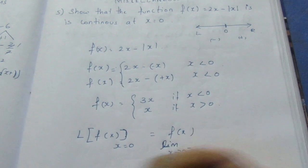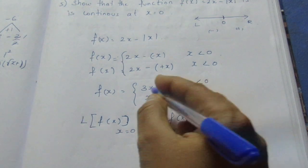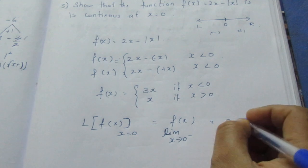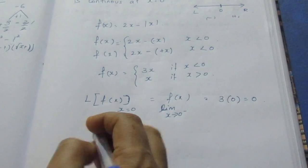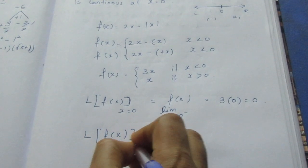x tends to 0 negative. Left hand side is negative. For this value, we have 3x, 3 into 0, we have 0. That is limit f(x) tends to 0.